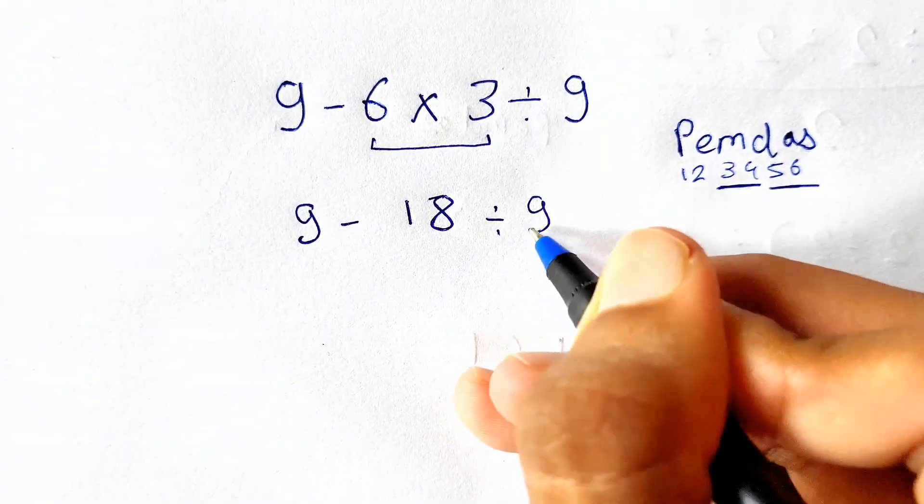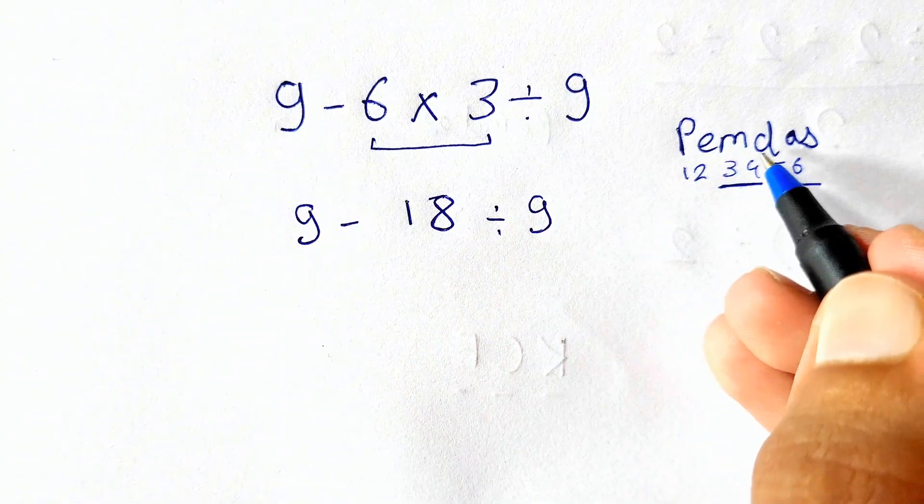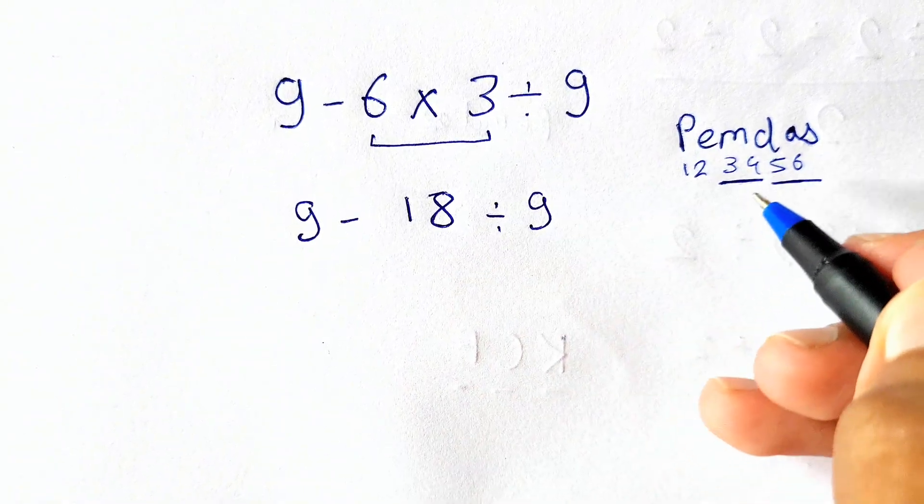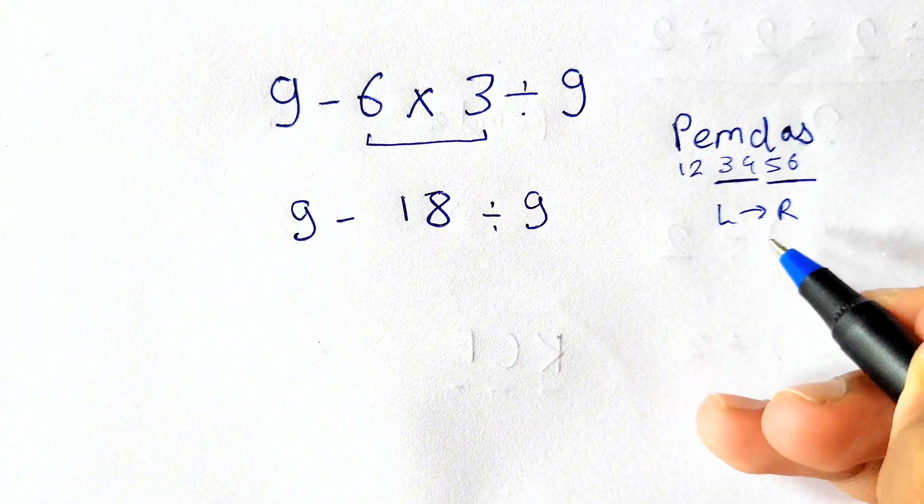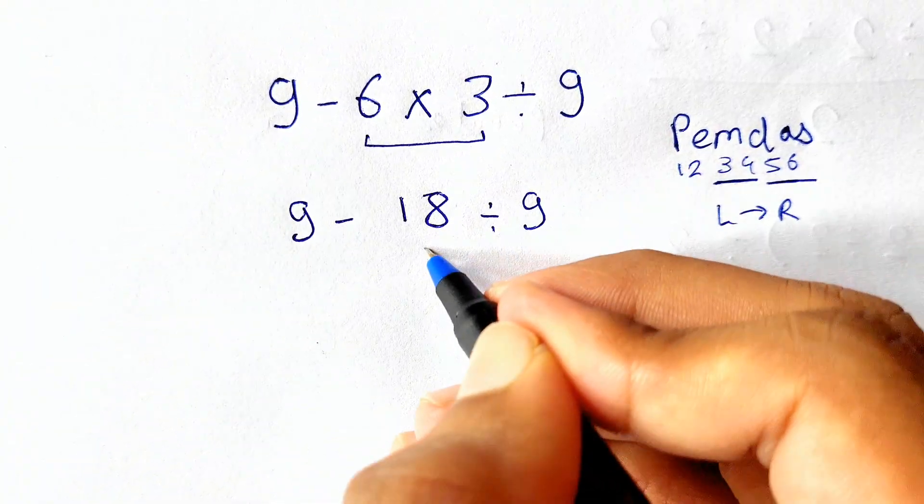So here we need to solve the division first as the priority of division is greater than subtraction and we need to go from left to right. Therefore first we solve the multiplication, then we are solving this division. So 18 divided by 9 is simply 2.